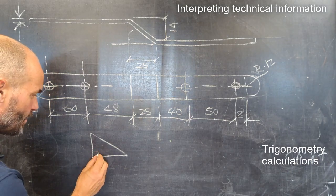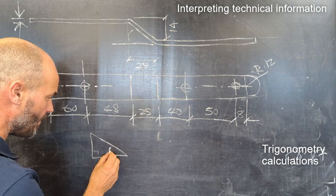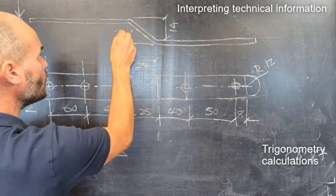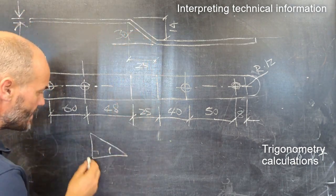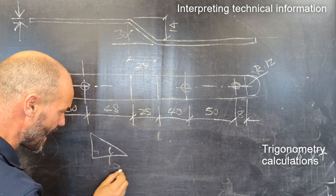This is the right angle in the corner. This angle here is the one we know - it's dimensioned on the drawing as 30 degrees, so that's 30 is the angle.